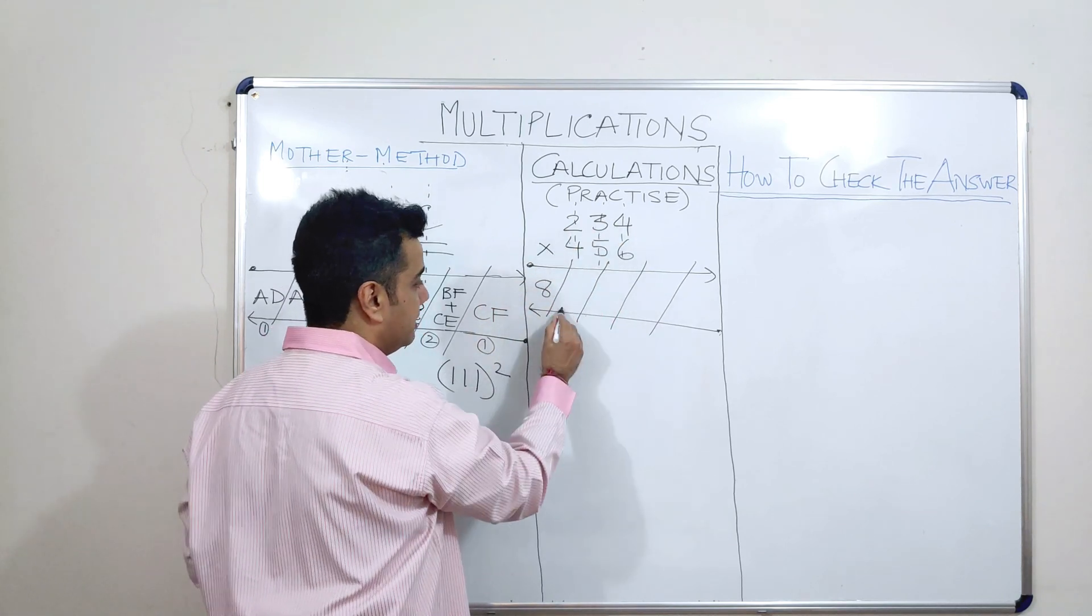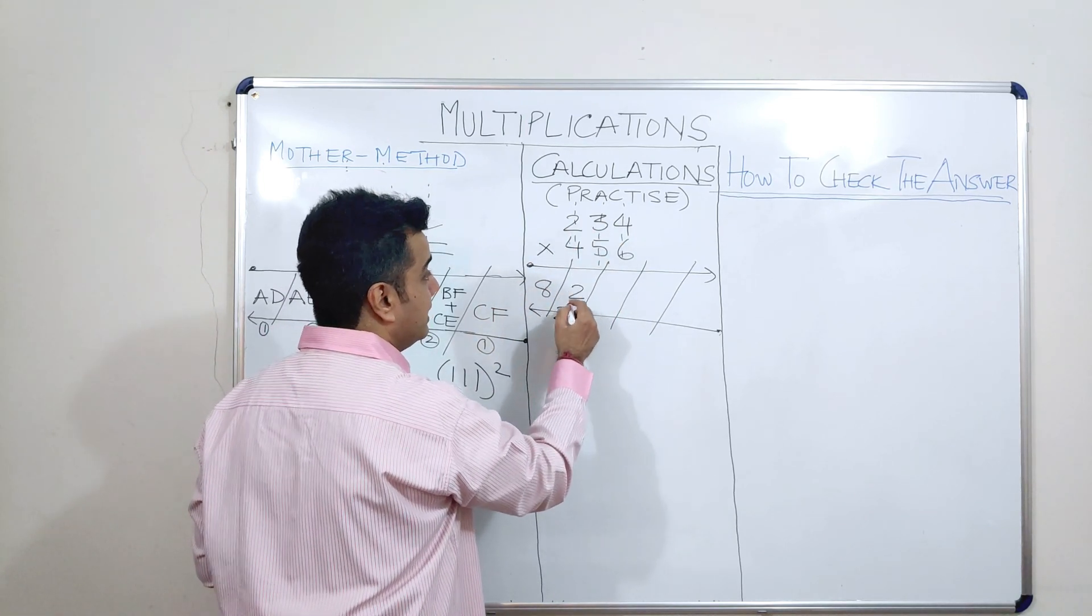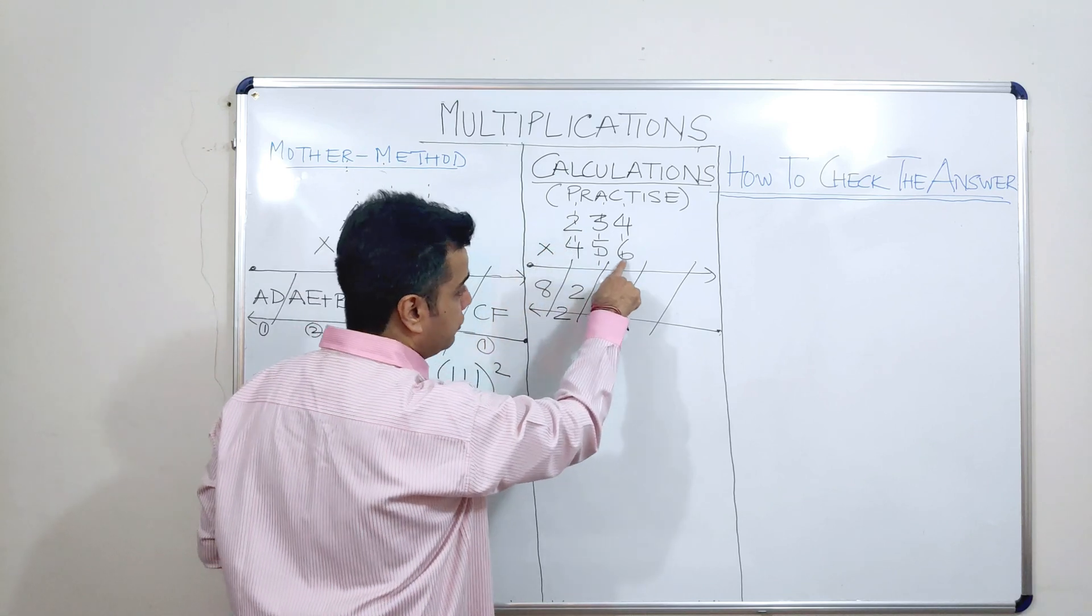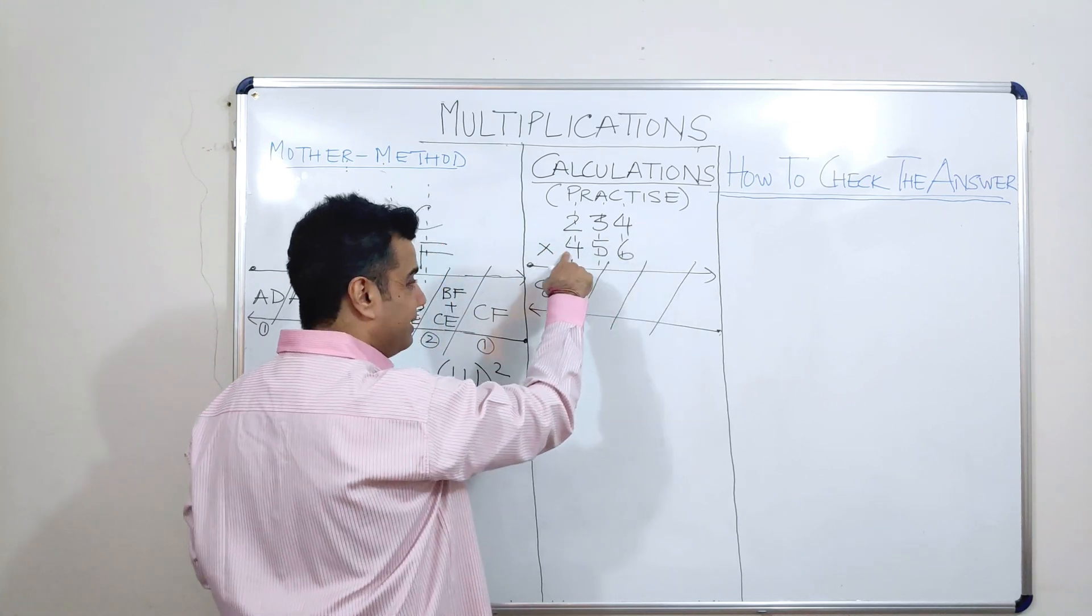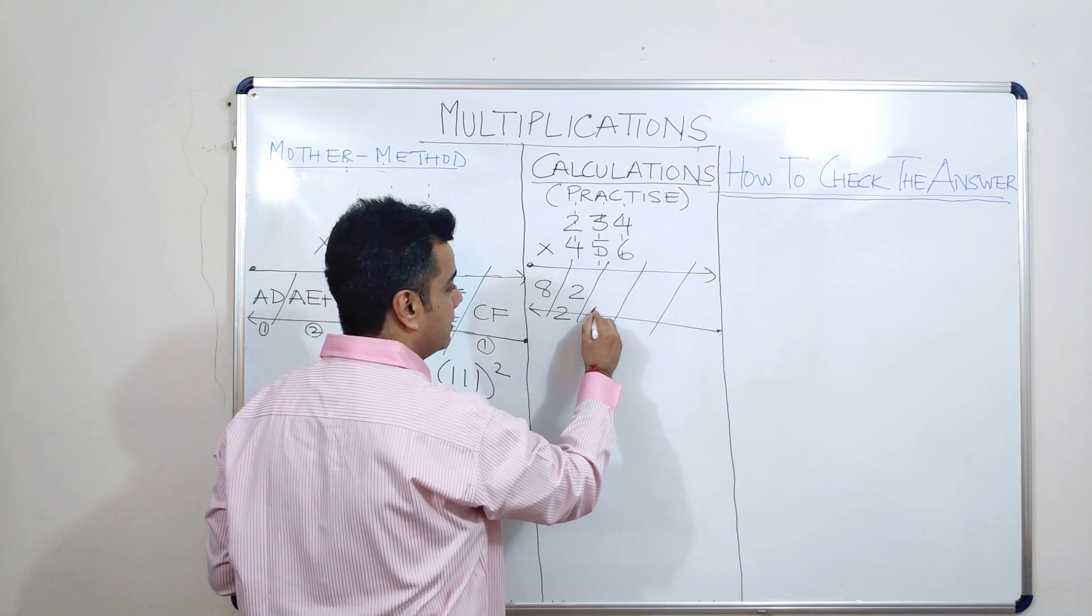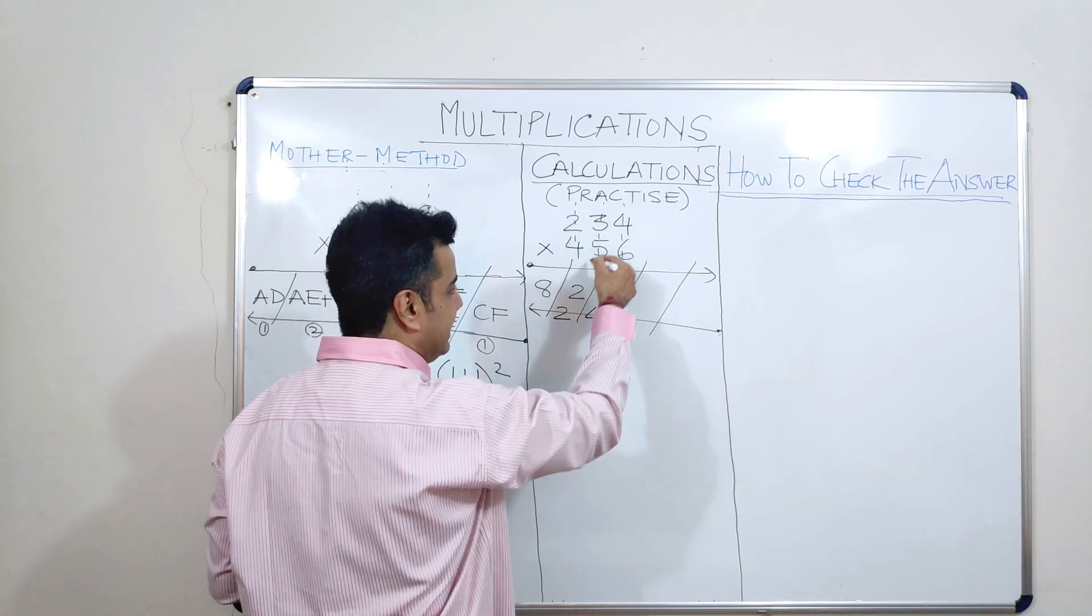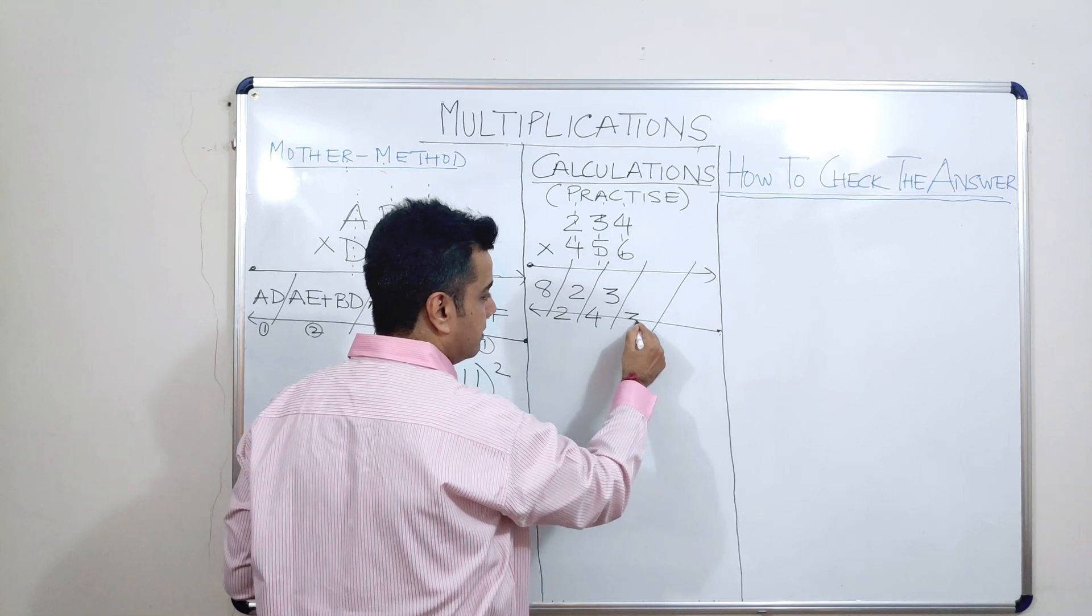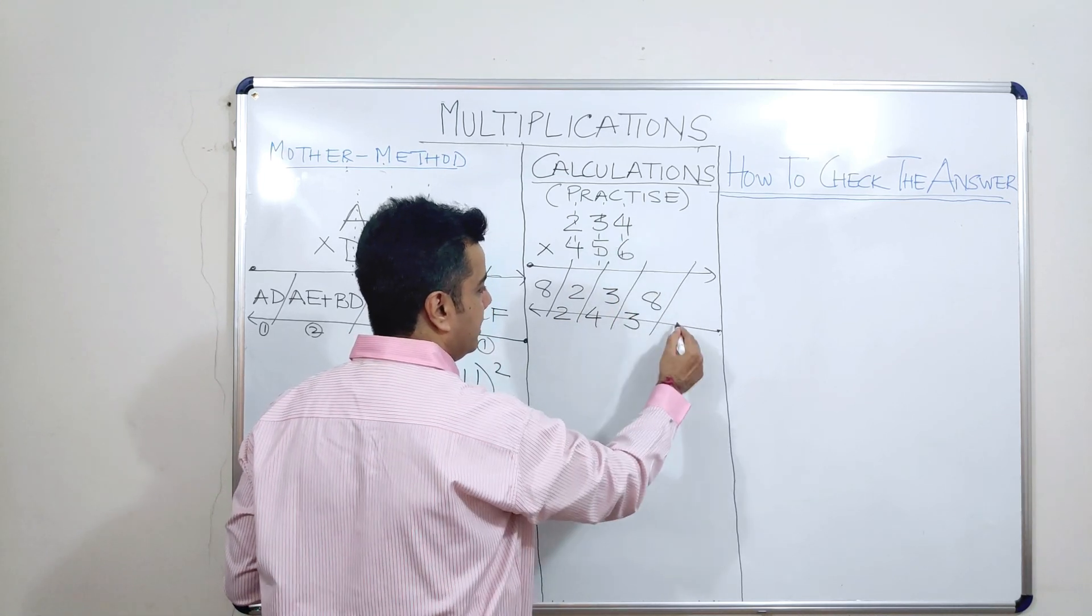So, now in the first coach after the engine, what am I supposed to do? I am supposed to cross multiply and add. So, how much is 2 into 5? 10 plus 12 makes it 22. Next, what am I supposed to do? 2 into 6 is 12, 12 plus 16 is 28, 28 and 15 is 43. Followed by 18 plus 20. Followed by 24.